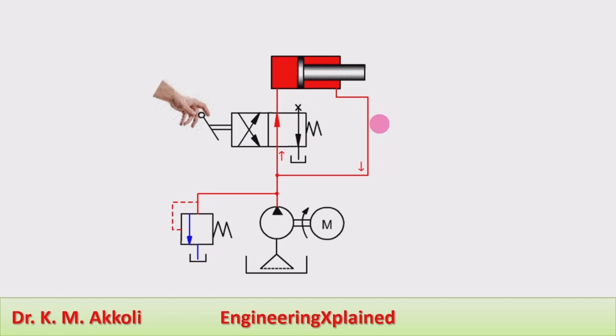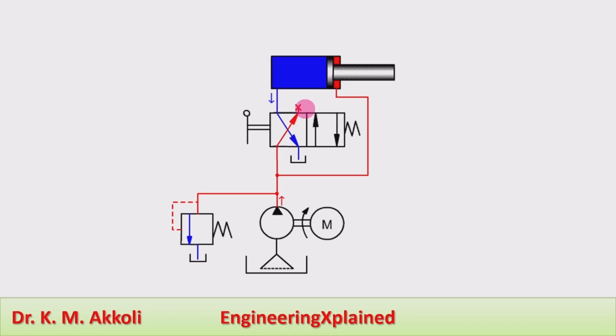In this regenerative cylinder, one of the ports of the four-way direction control valve is blocked.